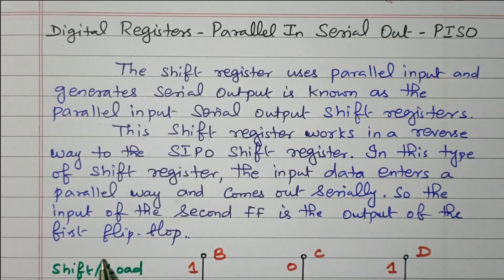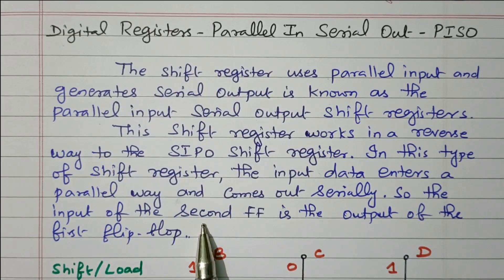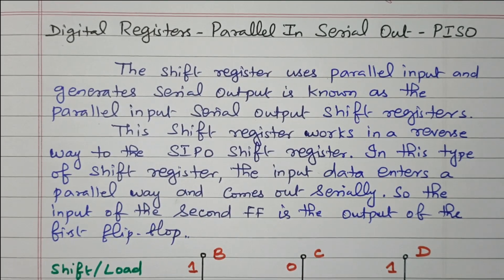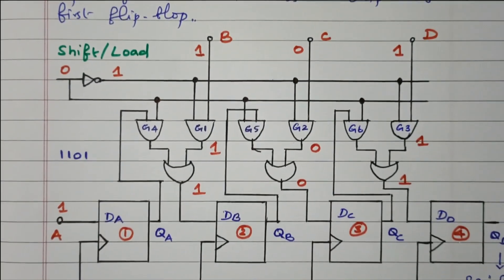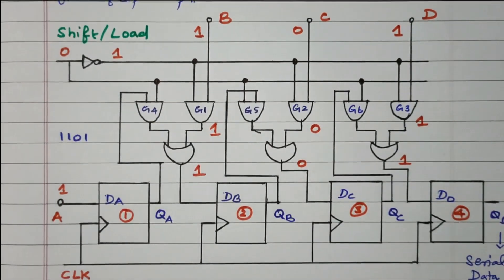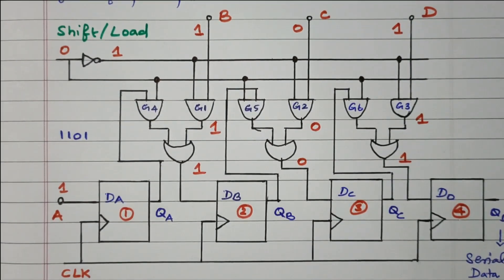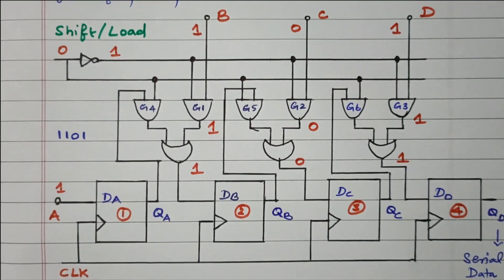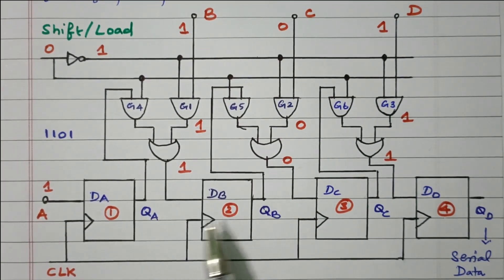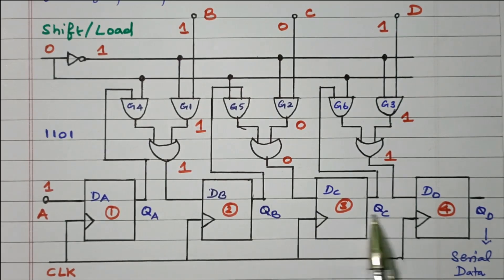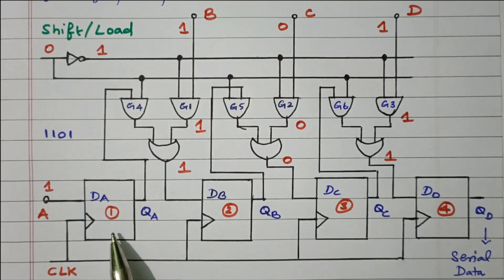In SIPO the data goes in serially and is taken out in parallel. So the input of the second flip-flop is the output of the first flip-flop — from the first flip-flop the data is given to the second flip-flop. Now we'll go to the logical diagram for this Parallel In Serial Out shift register. There are four D flip-flops available — one, two, three, four — it is constructed with four D flip-flops.